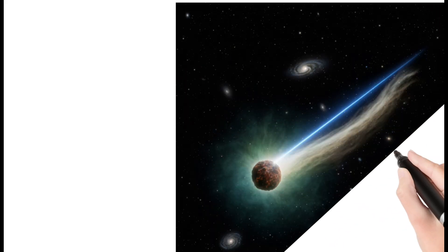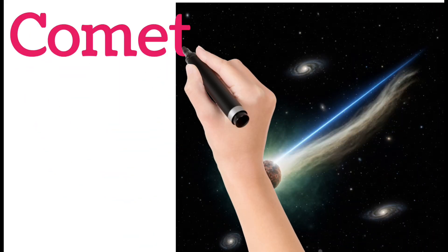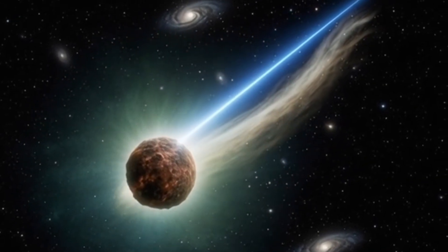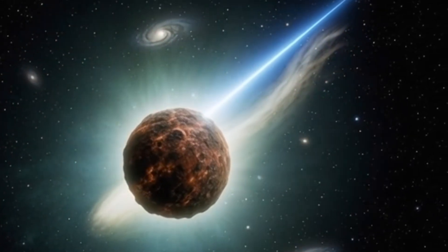Next, Comets. Comets are made of ice and dust. They glow when near the Sun. Comets have long bright tails. They travel in long orbits.